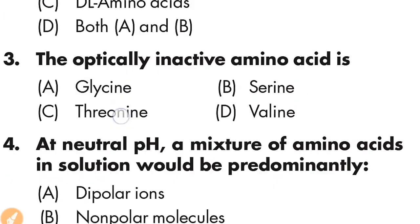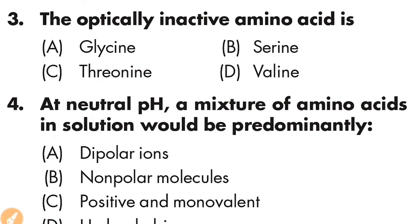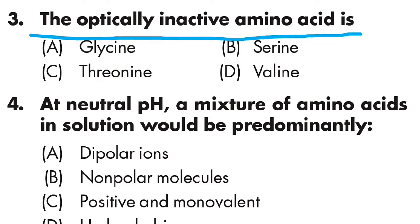Question number three: which is the optically inactive amino acid? Option A is glycine, Option B is serine, Option C is threonine, Option D is valine. Option A is correct — glycine is the optically inactive amino acid.